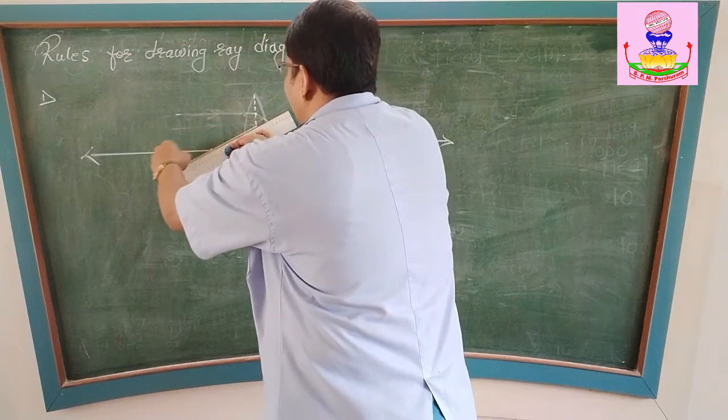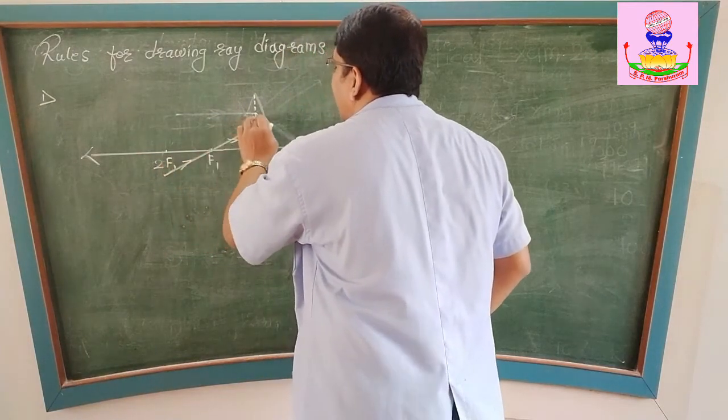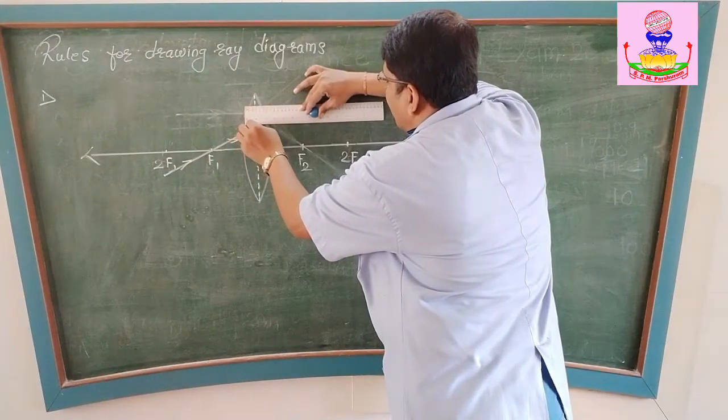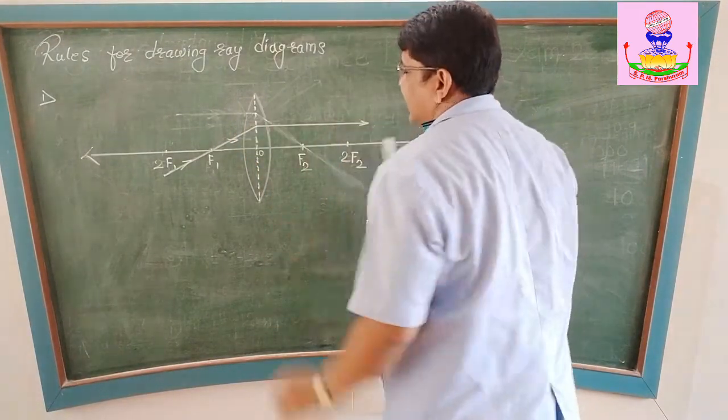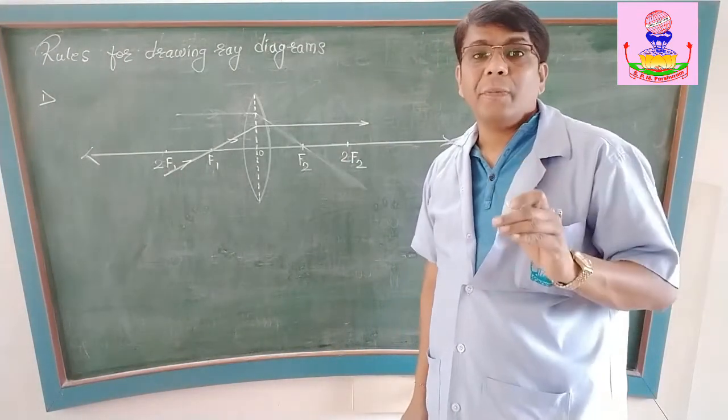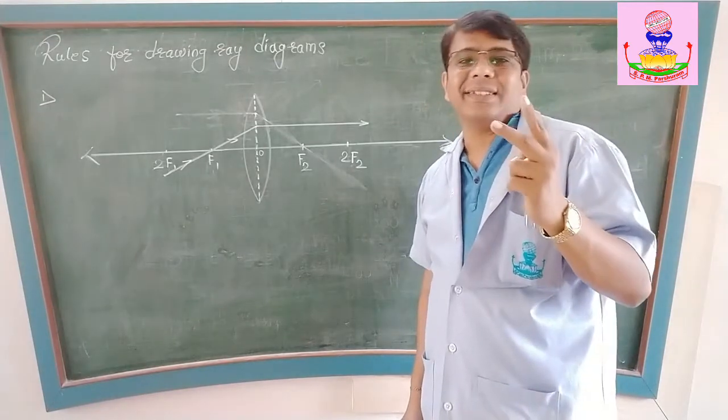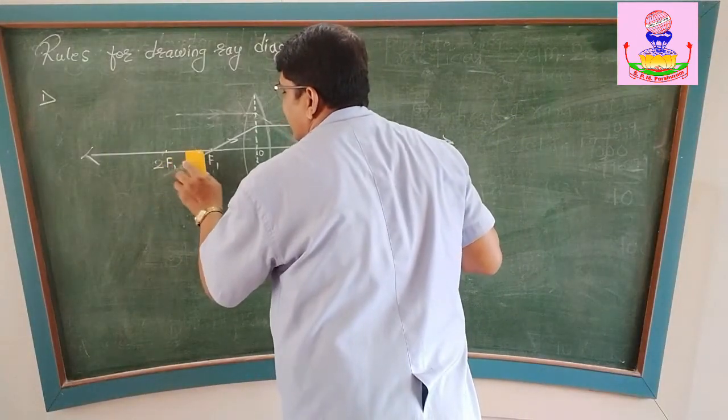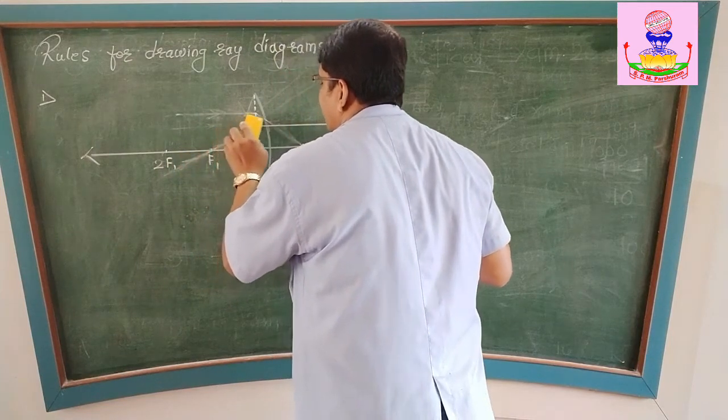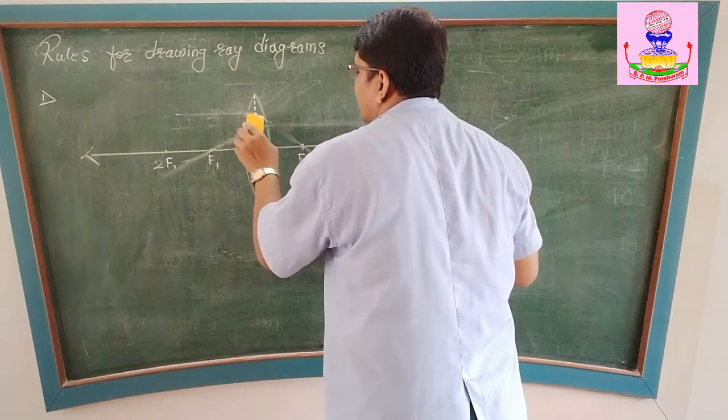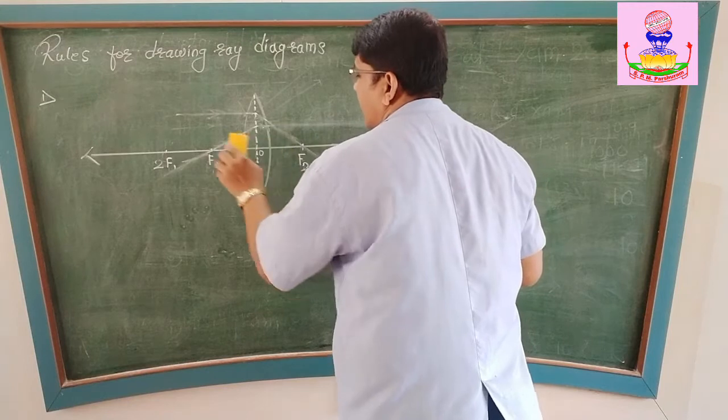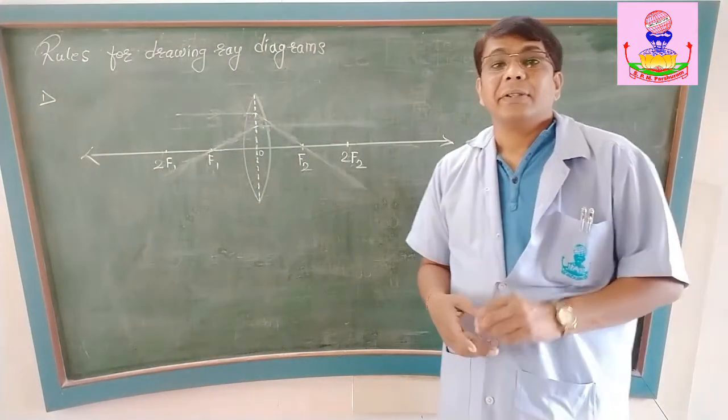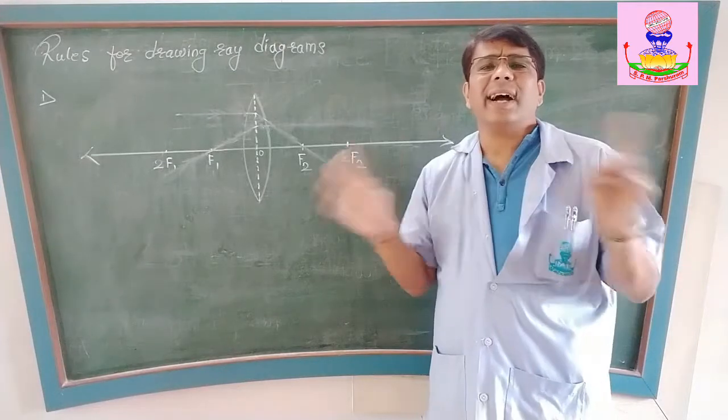Now, in this way, passing through principal focus, incident on the convex lens. After refraction goes parallel to the principal axis. So this is my second rule, second ray of light that I am going to consider. Now, third one.